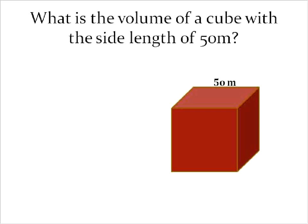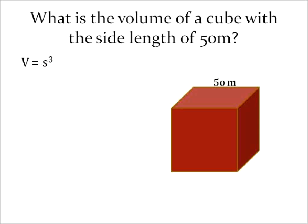We'll start out with finding the volume of a cube. When we're given a cube, we know that it is a square on all sides. This will be true of any rectangular prism, any prism basically that you find. First of all, you'll find the area of the base, and then you'll find the area of the height. So in this case, because all lengths are the same, that means we do the length of one side cubed. The volume is equal to the length of one side cubed.